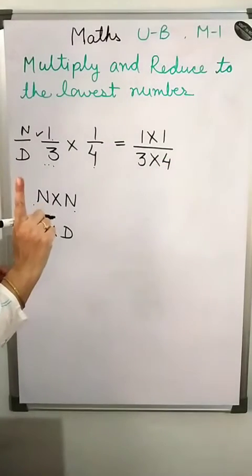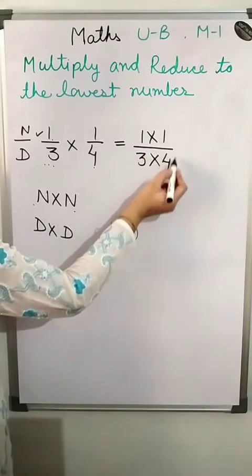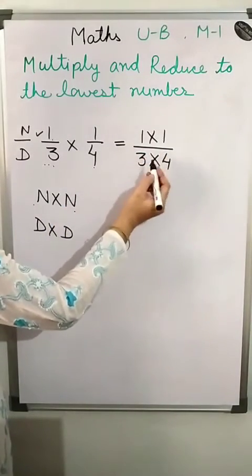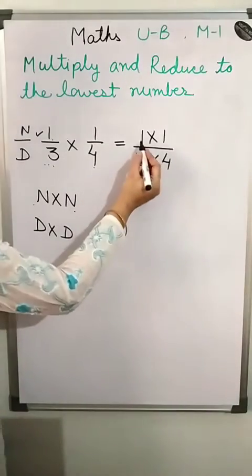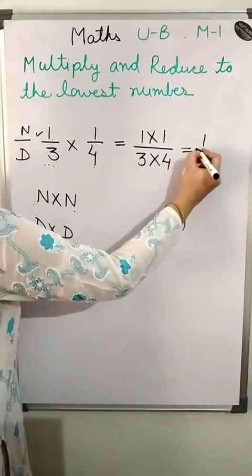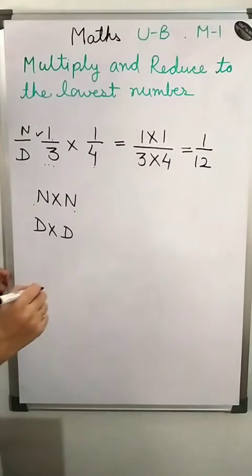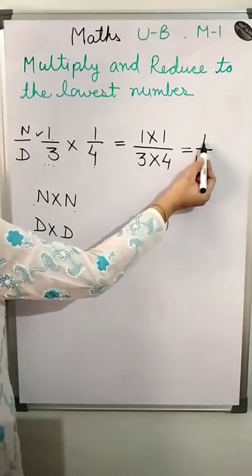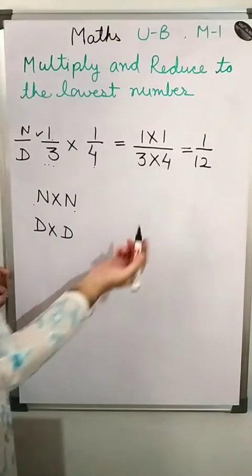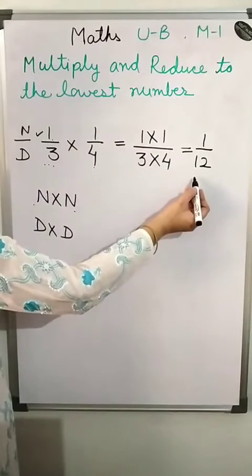One thing is that we reduce to the lowest number — check if we can divide. Now multiply: 1 into 1 is 1, and 3 into 4 is 12. Can we reduce 1 and 12? Since the numerator is 1, we cannot reduce it. It is already a proper fraction.